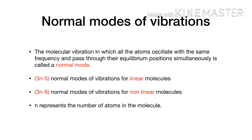Now let us see what the normal modes of vibrations are. A molecular vibration in which all the atoms oscillate with the same frequency and pass through their equilibrium positions simultaneously is called a normal mode. A linear molecule has 3n minus 5 normal modes of vibration, and for a non-linear molecule there will be 3n minus 6 normal modes of vibration, where n is the number of atoms present in the molecule.